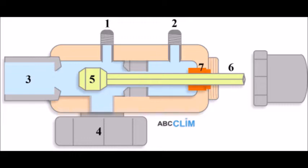Cette vanne est généralement en acier et elle est munie de deux prises de pression. En 1, nous avons la prise de pression permanente, sur laquelle nous allons raccorder des appareils de sécurité comme le presso-star HP ou le presso-star BP. En 2, nous avons la prise de pression du manifold ou du manomètre — c'est par l'intermédiaire de cette prise de pression que nous allons raccorder nos flexibles afin de pouvoir lire la valeur de pression HP et BP. En 3, nous avons l'arrivée ou l'entrée du fluide frigorifique. En 4, nous avons un écrou de raccordement qui va permettre de fixer la vanne de service soit sur le compresseur, soit sur la bouteille de liquide.